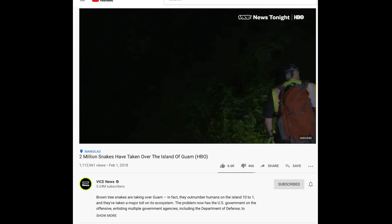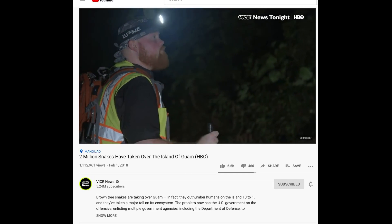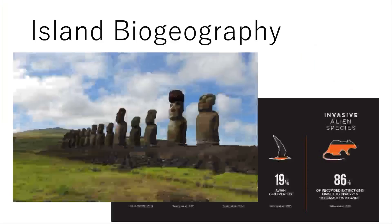Guam has no native snakes, so the native animals had no way to react to such a predator. Islands have a great climate, so people and animals alike like to exploit it, unfortunately. Easter Island is another example — it's known by its statues, and a video explains what is believed to have happened there.